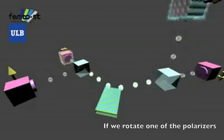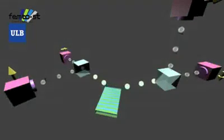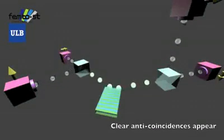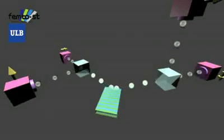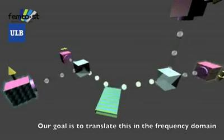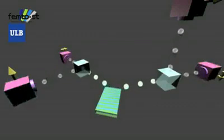If we rotate one of the polarizers, clear anti-coincidences appear. Our goal is to translate this into the frequency domain.